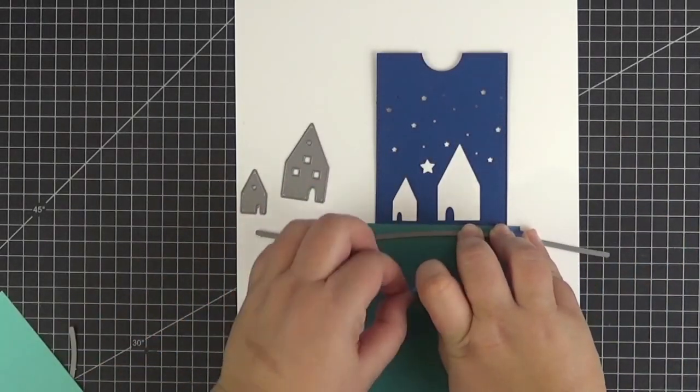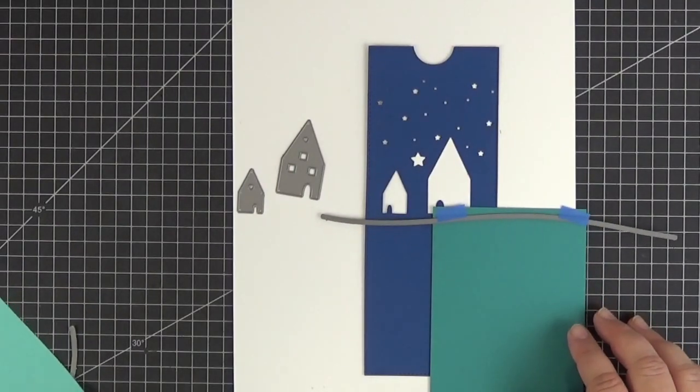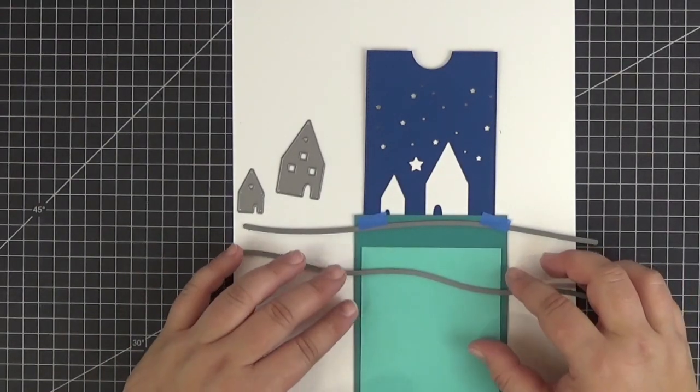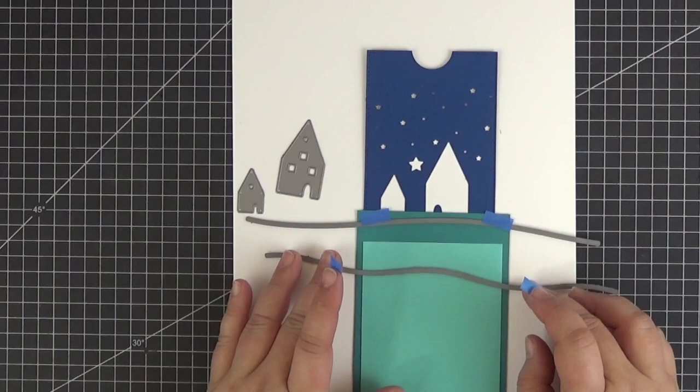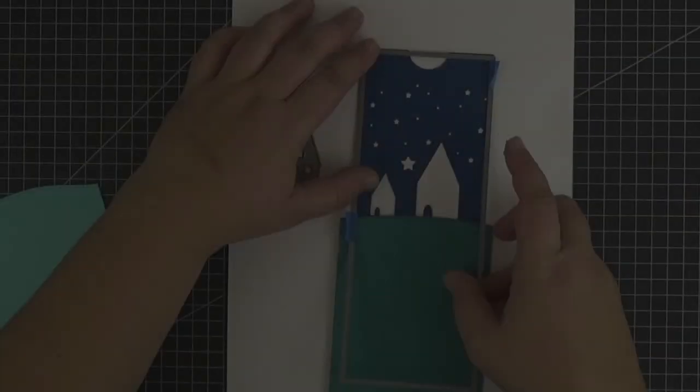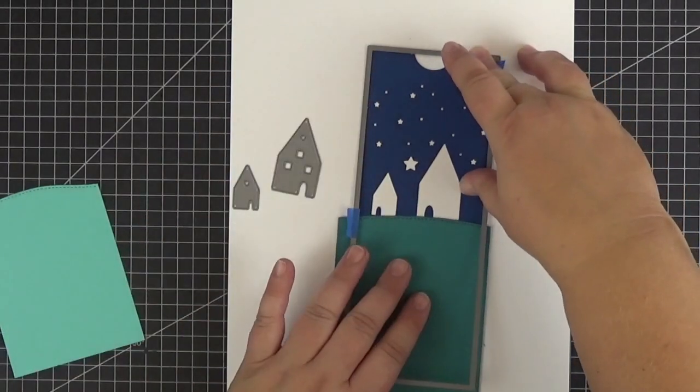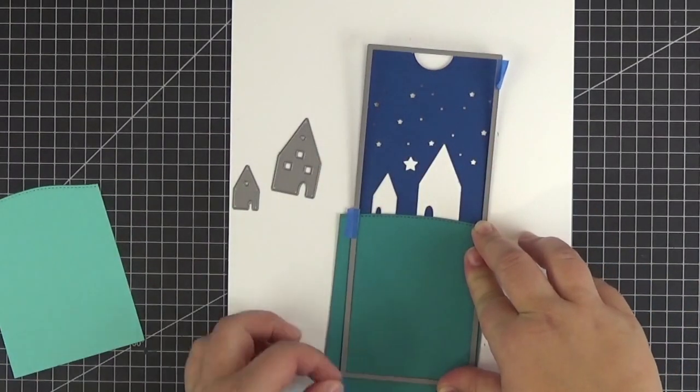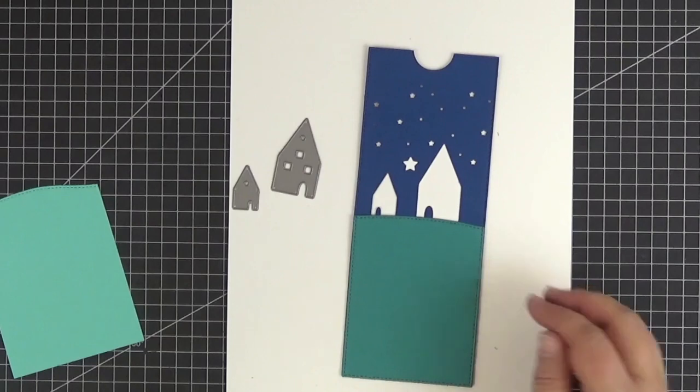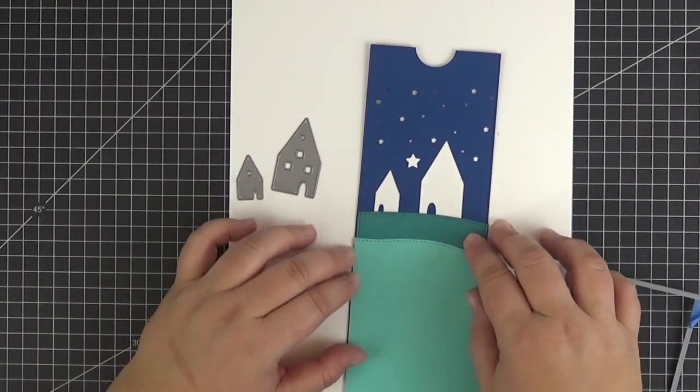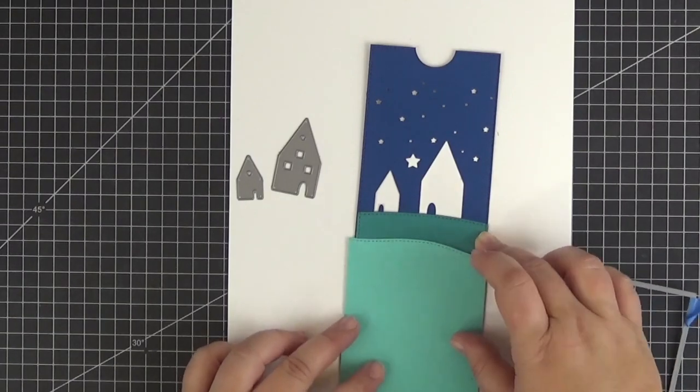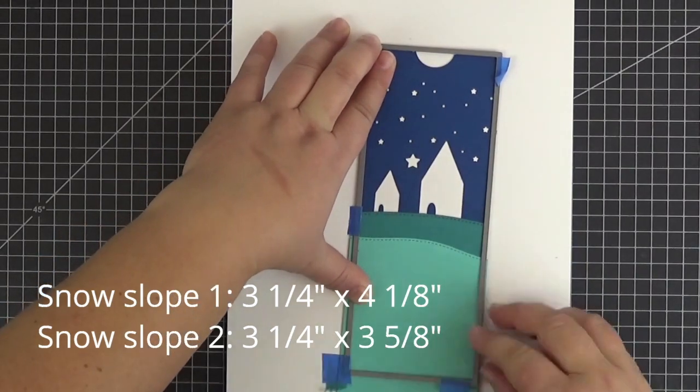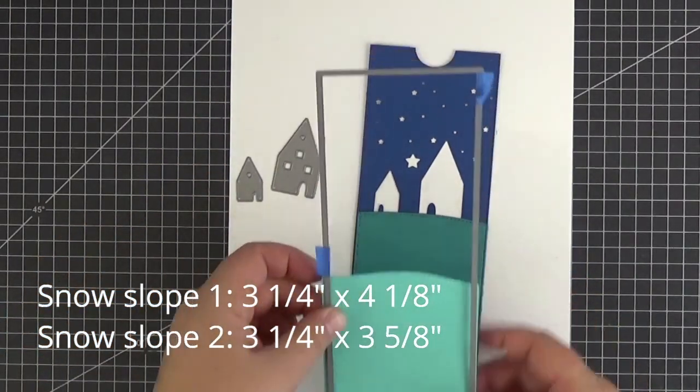Here I'm using a couple of the dies from the stitched slimline snowdrifts dynamics to die cut my snowy hills. I've chosen tropical teal and blue raspberry because in my mind that's the color of snow at night. After die cutting the curved shapes, we will use the rectangular slimline die to add the faux stitching to the edges. Be careful so that you don't cut off too much of the darker panel. We want the bases of the houses to be slightly covered. On the other hand, you can make the lighter panel as tall as you like. Mine are four and one-eighth inches and three and five-eighths inches tall.